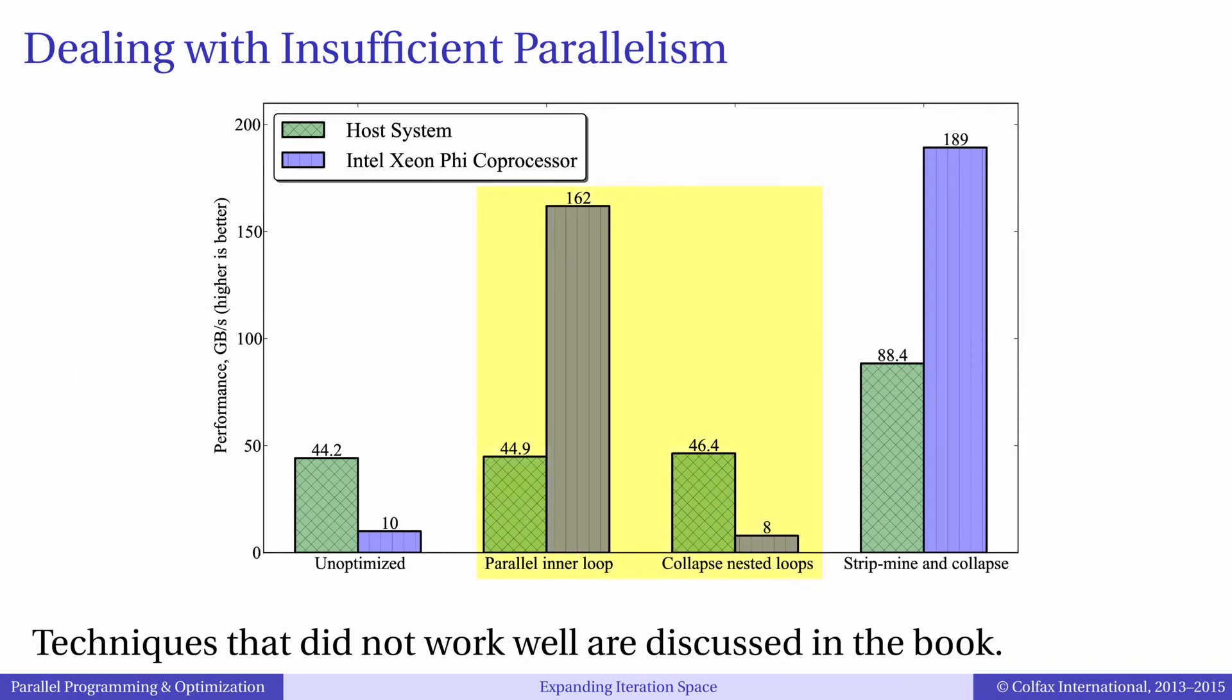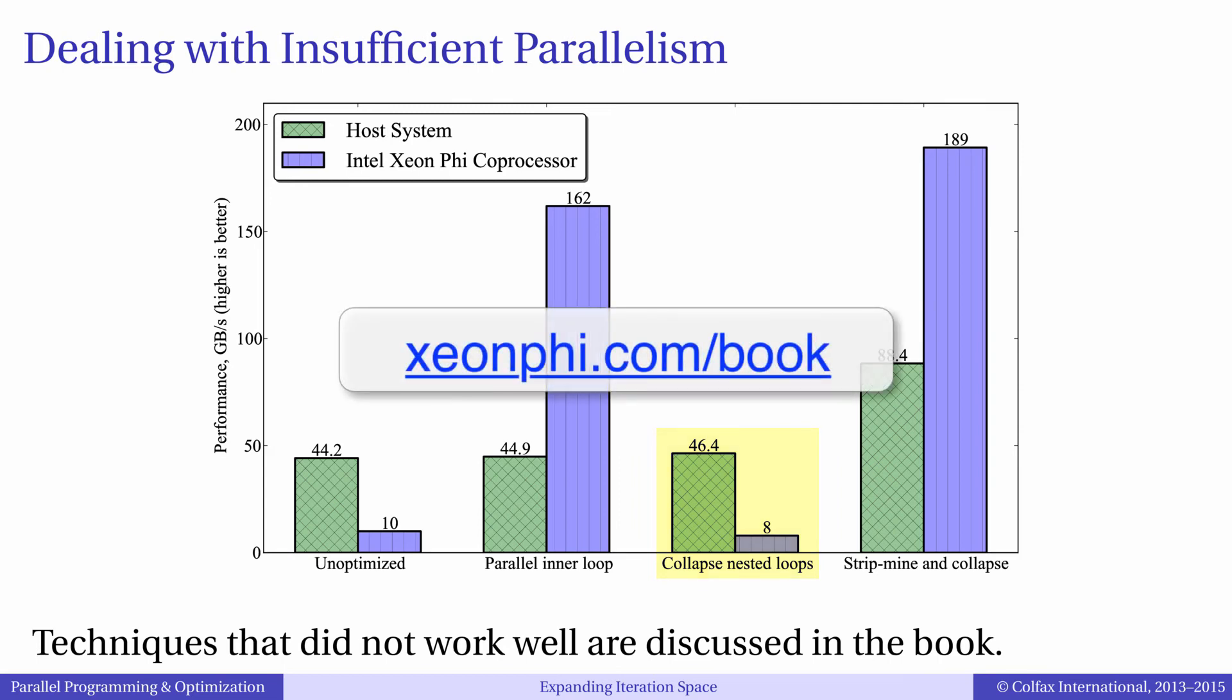The second and third sets of bars show performance for alternative solutions of the problem. As you can see, parallelizing the inner loop was almost a good solution, but loop collapse without strip mining did not go well at all. Refer to our book for more details on those measurements.